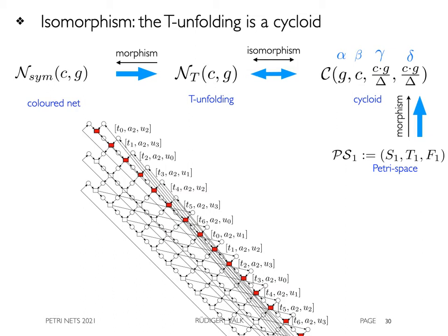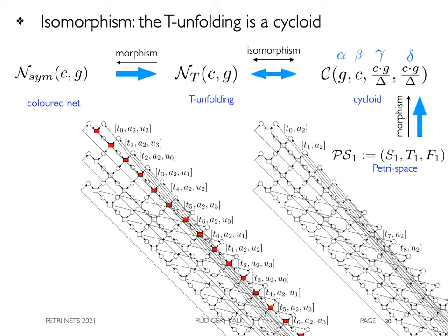As the cycloid is itself a homomorphic image of the Petri space, this is also the case for the colored net. The cycloid of the example looks like this. The definition of the isomorphism map seems to be obvious here, but is not so much here.